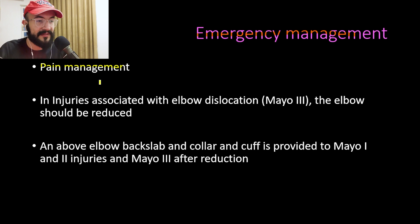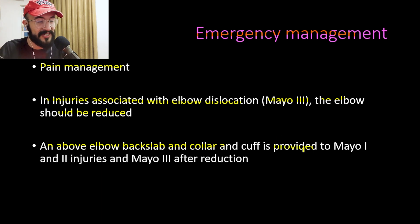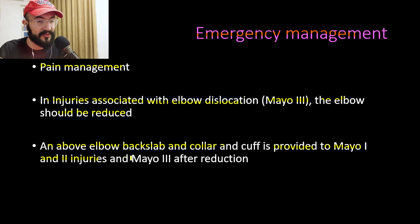For emergency management of olecranon process fractures, we provide the patient with pain management. In injuries associated with elbow dislocation — Mayo Type 3 — the elbow should be reduced. An above-elbow backslab with a collar and cuff or sling is provided for Mayo Type 1 and Type 2 injuries, and also for Mayo Type 3 after the elbow is reduced.